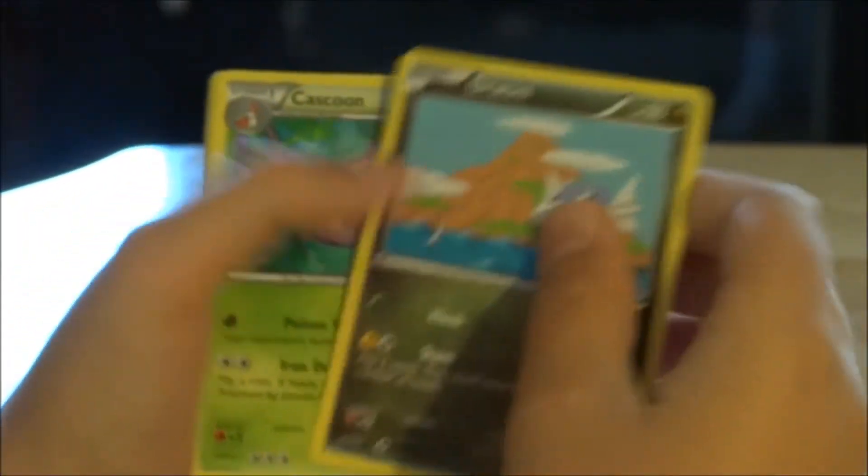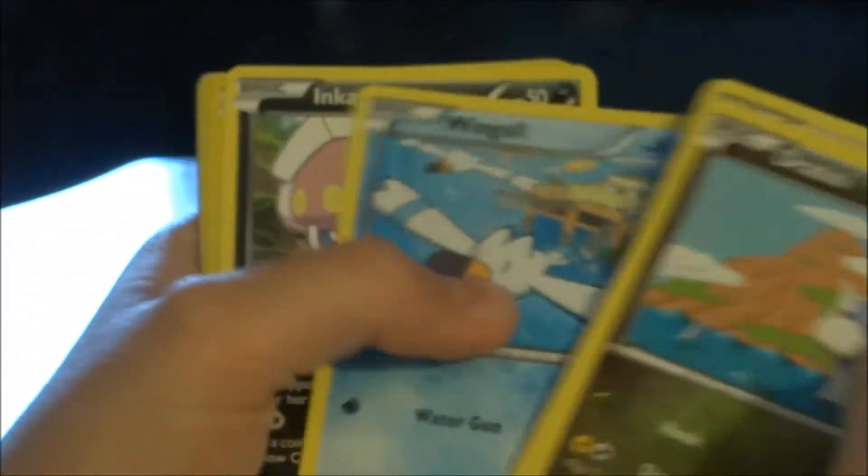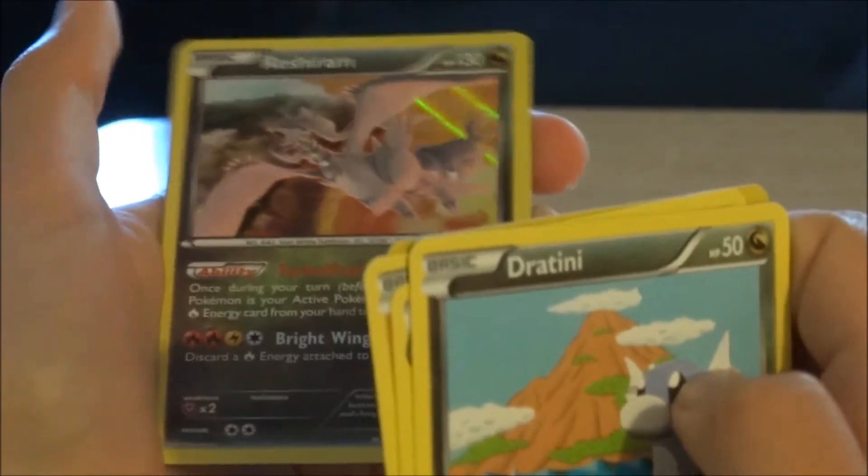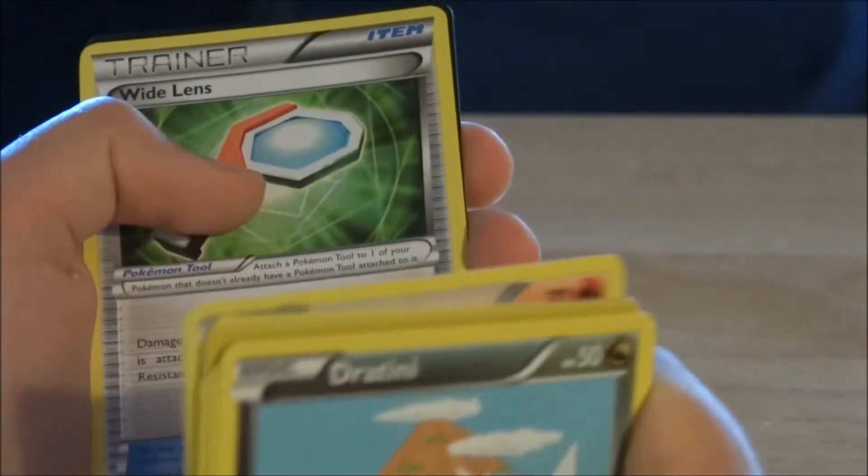Trapinch, Cascoon, Hawlucha, Wingull, Inkay, Reverse Togepi. Awesome, a Holo Reshiram! Yeah. Trainer's Mail, Fletchinder, Wide Lens.